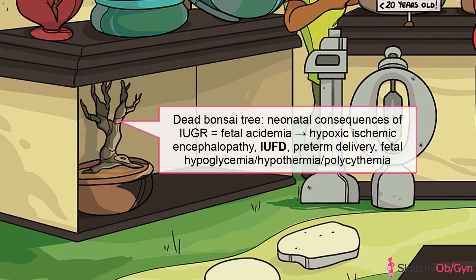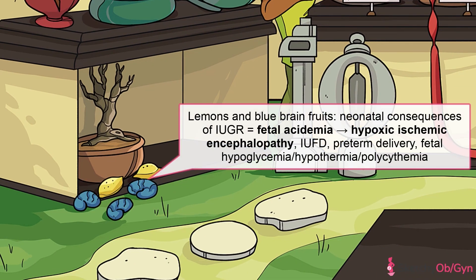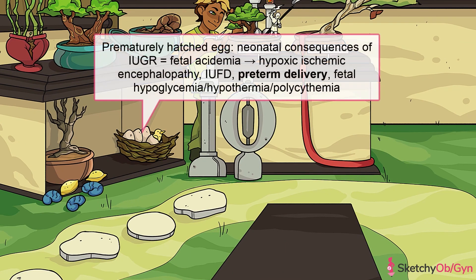The main consequences of IUGR are perinatal morbidity and mortality. On the most extreme end, the risk of intrauterine fetal demise increases in fetuses with IUGR, symbolized by this dead bonsai tree. Poor placental perfusion can also cause fetal acidemia which, if prolonged, can cause hypoxic ischemic injury to the brain, symbolized by lemons and blue brain fruits respectively. One of the major fetal risks is preterm delivery, represented by this prematurely hatched egg, as many fetuses will show signs of distress at preterm gestational ages requiring delivery. Those born preterm are at increased risk of respiratory distress syndrome, necrotizing enterocolitis, and death.